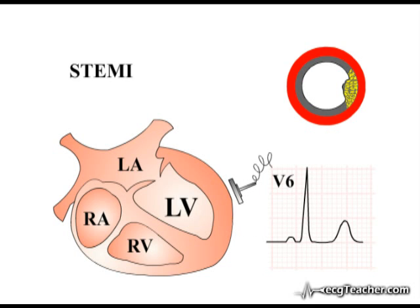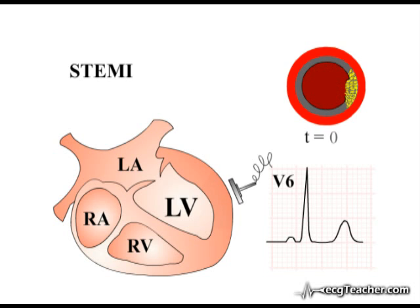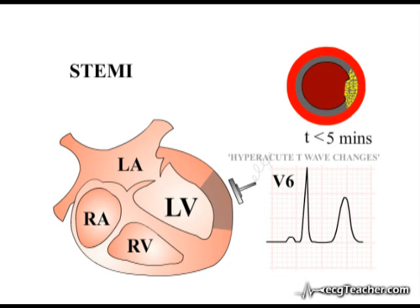You will remember from section 1 that normal T waves tend to be slightly asymmetrical in shape and less than 50% of the height of the preceding R wave. Within the first few minutes of complete vessel occlusion, T waves in the leads overlying the affected area rise in amplitude. The mechanism underlying these hyperacute T wave changes is unknown.